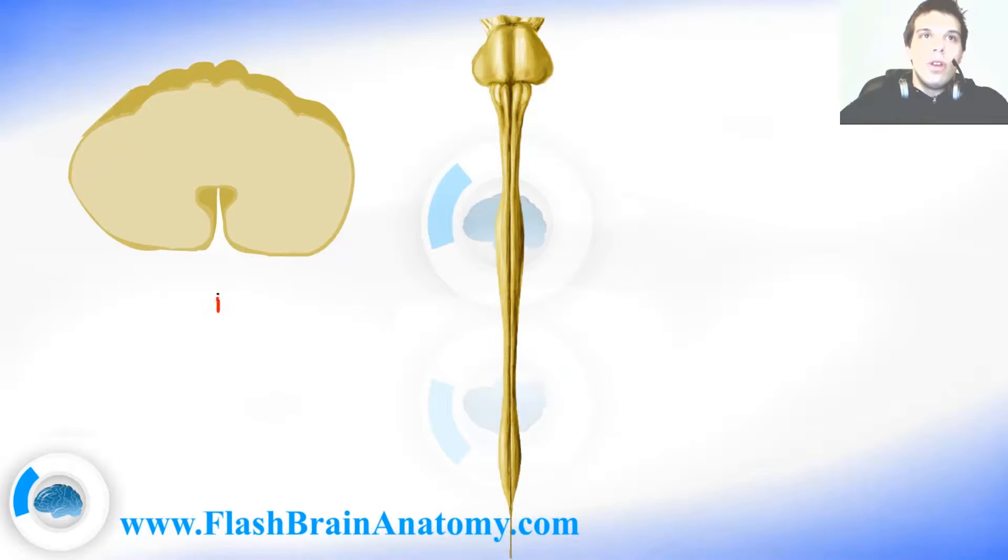From the anterior point of view you can see here the median fissure and over here you should be able to notice the anterolateral sulcus. On the back there is an intermediate septum over here. So this is the median fissure. Over here should be anterolateral sulcus. This is the intermediate septum.